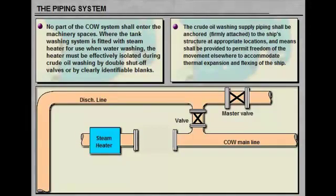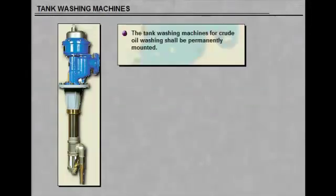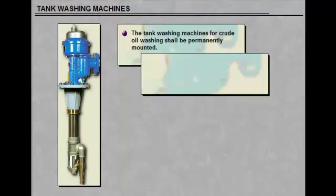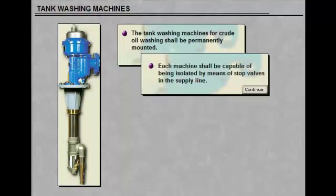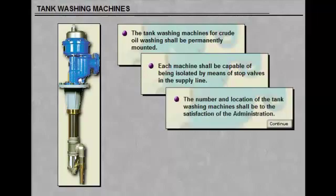The tank washing machines for crude oil washing shall be permanently mounted. Each machine should be capable of being isolated by means of stop valves in the supply line. The number and location of the tank washing machines must be to the administration's satisfaction.